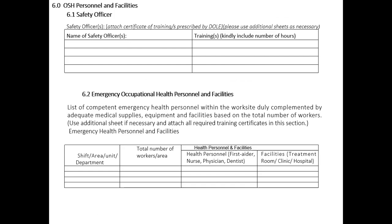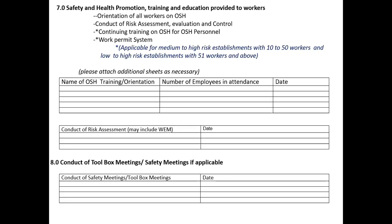OSH personnel and facilities: identify the safety officer and the type of training they completed — 8-hour, 10-hour, or 40-hour. For emergency occupational health personnel and facilities, since we have medical insurance and agreements with nearby hospitals and clinics, those serve as our health personnel and facilities. Safety and health promotion, training, and education includes orientation of all workers on OSH — this is ongoing — along with risk assessment, evaluation, and control. As employees, you also help identify hazards, evaluate risks, and determine control measures.